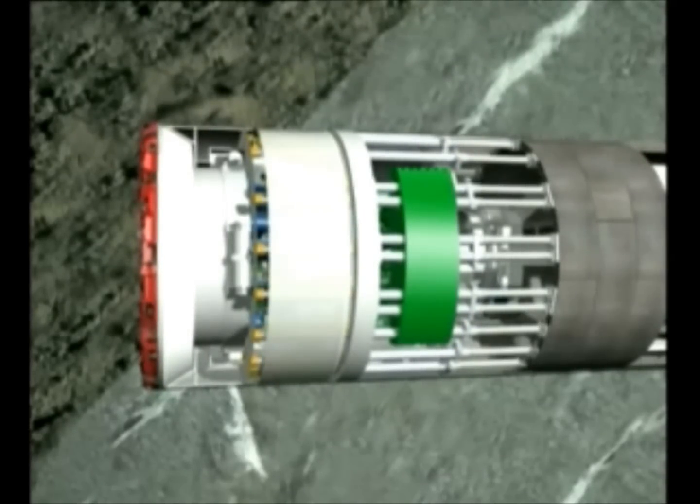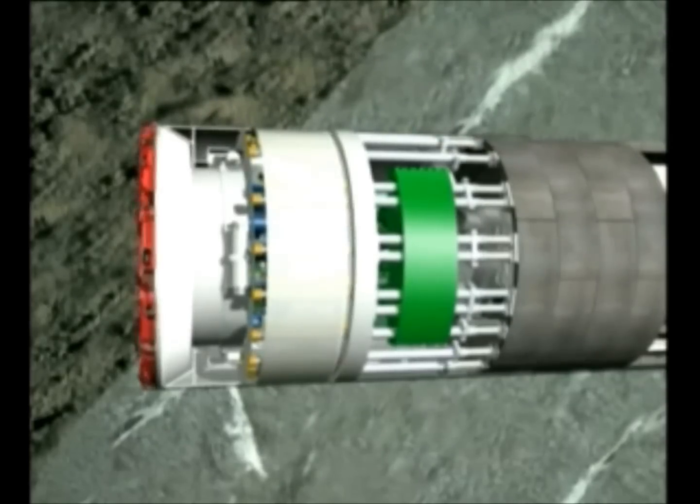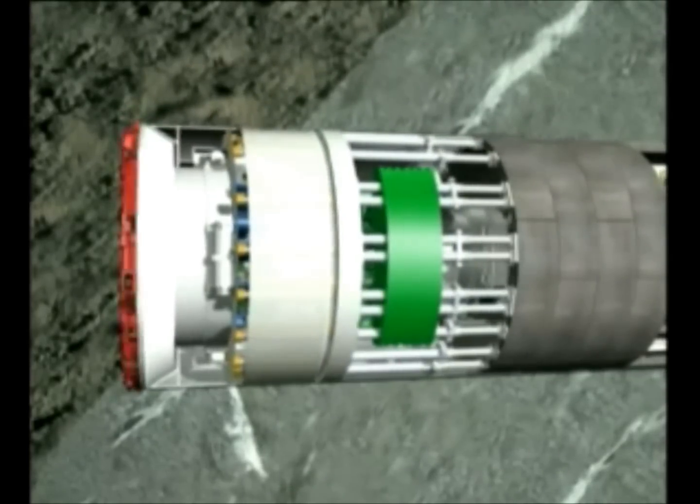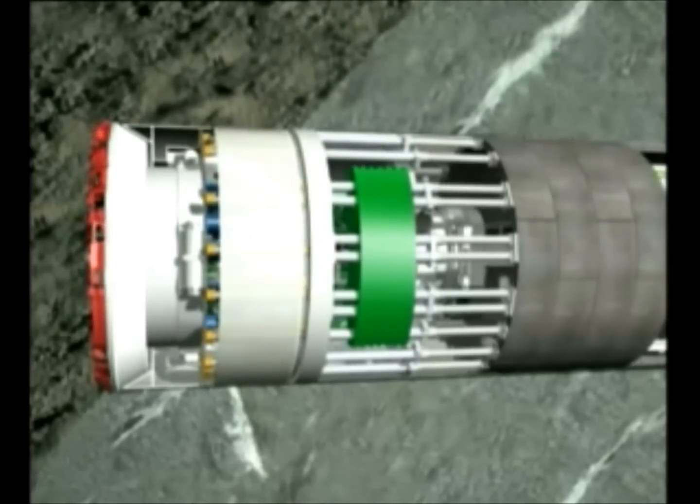This kind of excavation is called discontinuous, since, as with a conventional shield, thrust with cylinders is only possible after complete installation of a segment ring. This operating mode ensures optimum security and faulty ground.